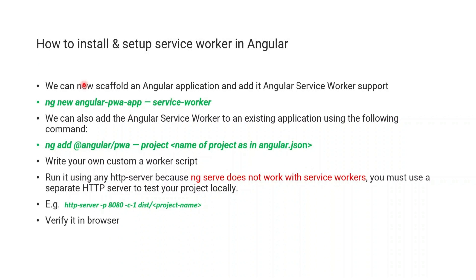Now let's see how to install and set up a service worker in Angular. There are two ways: create an entirely new application, or add service worker support to an existing application using the command `ng add @angular/pwa`. After adding support, we write our own custom worker script. We cannot run it with `ng serve`; we need a different server like http-server, running on port 8080, pointing at our Angular build output. Then we verify the service worker in the browser's developer tools.